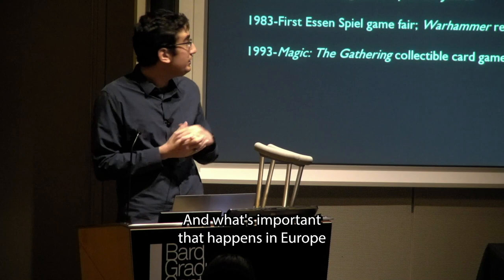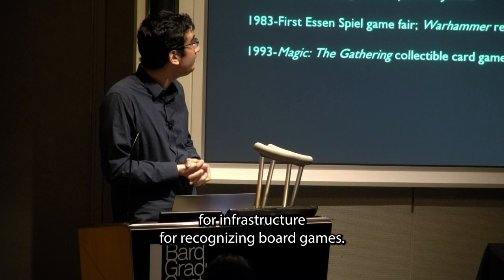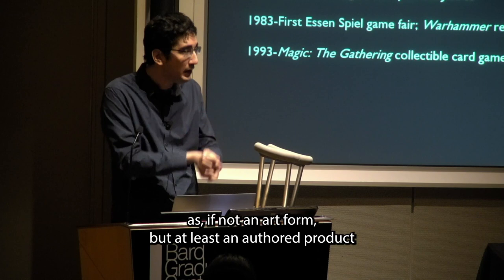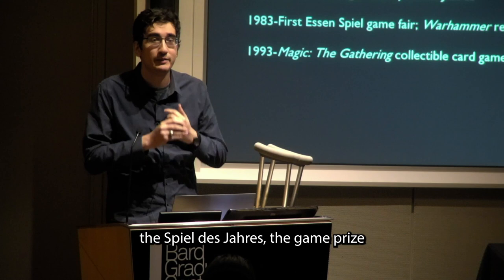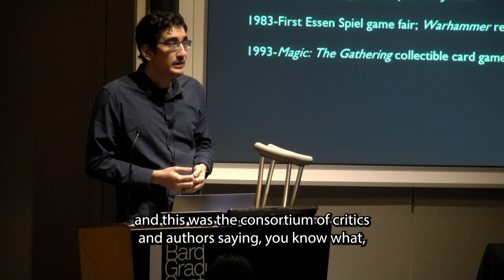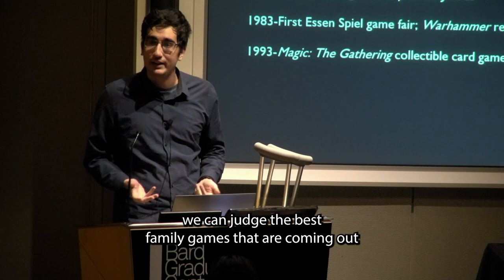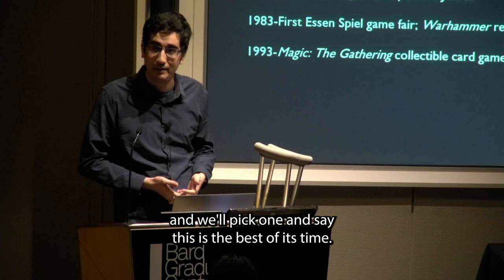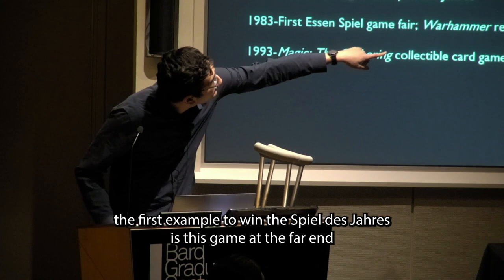What's important in the early 1970s into the early 90s is the pioneering of infrastructure for recognizing board games as, if not an art form, at least an authored product — an ideological product. In 1979, the Spiel des Jahres, the game prize essentially in German, was established. This was a consortium of critics and authors saying they could judge the best family games coming out and pick one to say this is the best of its time. This was an important recognition of board games. The first winner was Hare and Tortoise — in German, Hare and Hedgehog — a racing game replicating the Aesop's fable, authored by British designer David Harlett.